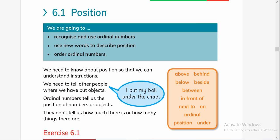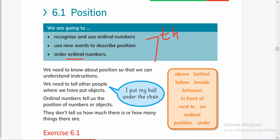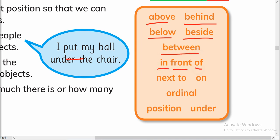So what are we going to learn in this chapter? In this unit we recognize and use ordinal numbers — ordinal numbers are first, second, third, fourth, fifth — and use new words to describe a position. Order them — ordinal numbers order things, like put them in the right arrangement: first will come first, then second. Seventh cannot come before first. The position words we will read are: above, behind, below, beside, between, in front of, next to, on, ordinal position, and under.